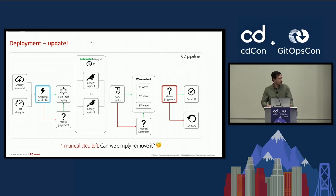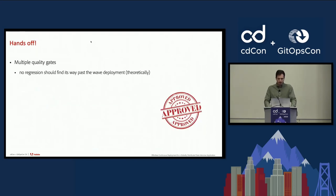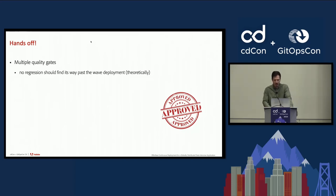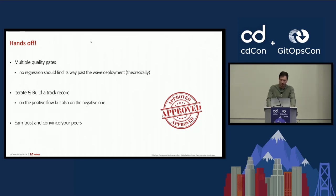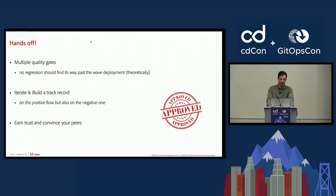The question is whether we still need that last manual step or could we simply remove it. For this last step, there is no new technique — we already have multiple quality gates and no regression should find its way past the wave deployment step. But of course there can be misconfigurations in the pipeline. This is actually where we are at present: iterating and building a track record of how the pipeline behaves, fine-tuning and fixing along the way. Even with this last manual step, the release process has been greatly improved and the experience is much more tolerable for the release engineer.